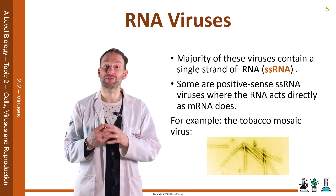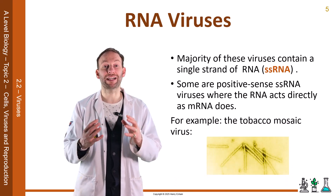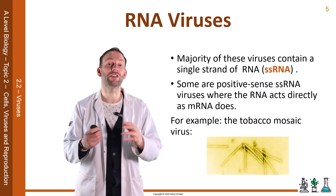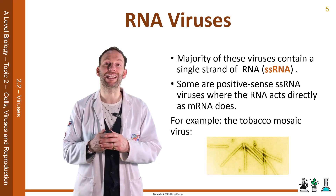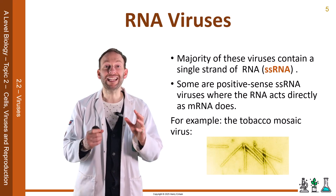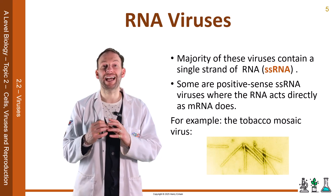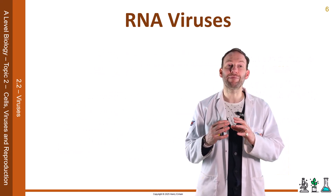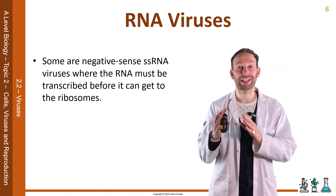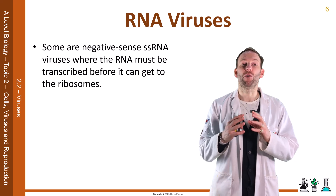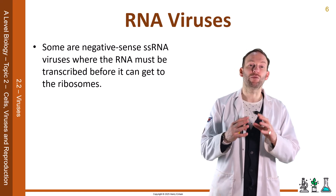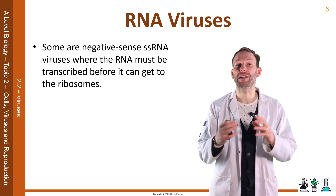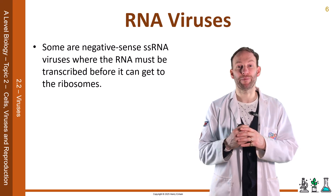An example of a positive-sense SS-RNA virus is the tobacco mosaic virus, which affects plants such as tobacco and causes a mottling effect on the leaves that looks like a mosaic. The negative-sense SS-RNA viruses are where the RNA must be first transcribed before it gets to the ribosomes. An example of this type of virus is Ebola.